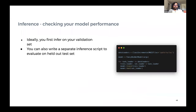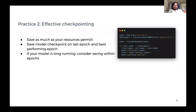The next practice involves effective checkpointing. Ideally save as much as your resources permit, but when resources are scarce — especially on HPCs with limited data limits — it's best to save the last epoch as well as the best-performing epoch. You should have a validation metric to determine which checkpoint is best, saving your model and config files. Some people even save a copy of their code, which enables greater reproducibility if you want to go backwards in time. If your model fails, you can load from a previous checkpoint.